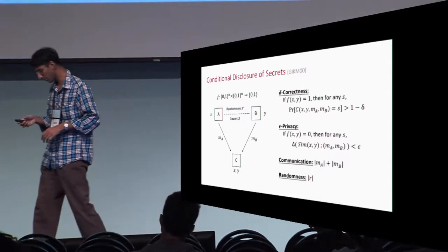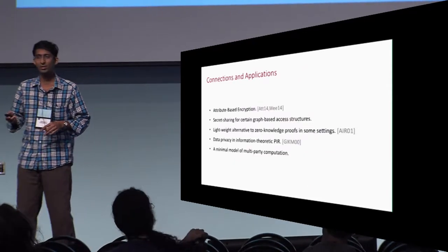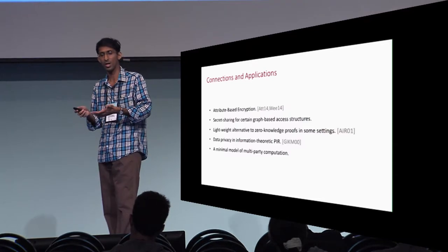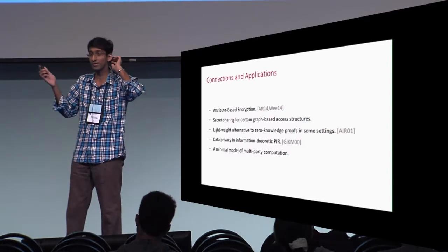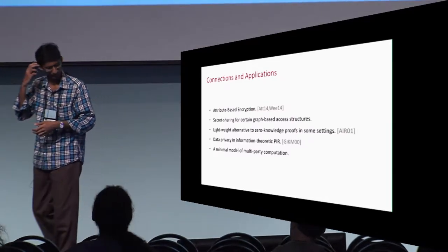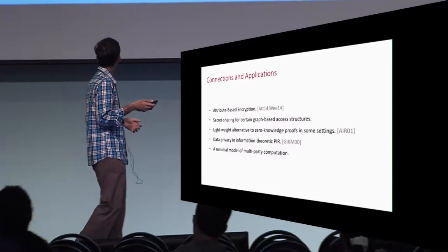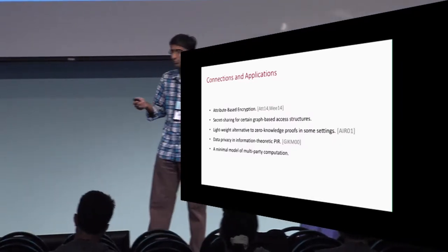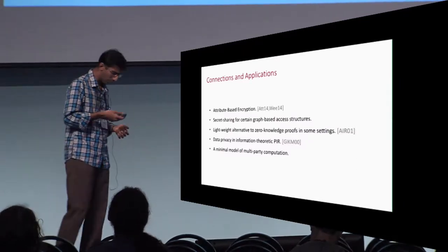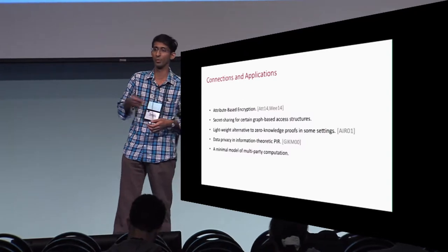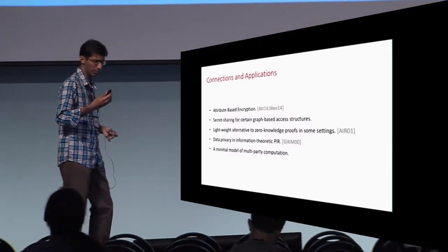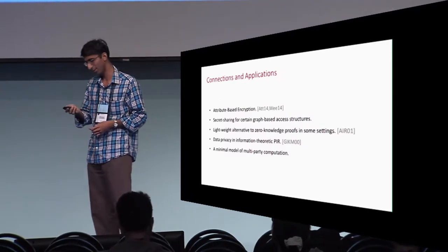This is the conditional disclosure of secrets. Why do we want to study it? It turns out it's related to a lot of different things. Perhaps of primary importance is its relationship with attribute-based encryption — by itself it's a simplified version that gives single-time security. The application I'm most interested in is that this is a very simplified model of a certain functionality in multi-party computation. If you want to prove communication bounds for multi-party computation in general, it's worthwhile to study the simpler model first, and maybe develop tools that scale up to full-fledged multi-party computation.